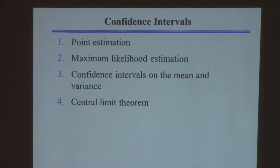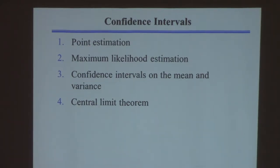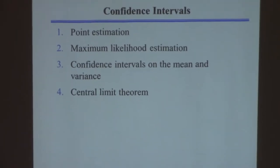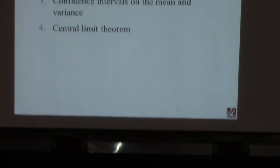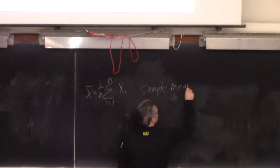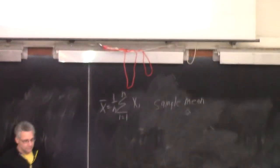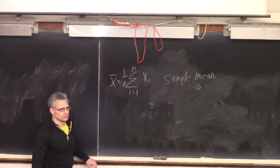We're going to talk today about something called confidence intervals. The idea is that if we have a group of samples and we'd like to calculate the mean, we take all the sample values, add them up, and divide by n — that's called the sample mean. Hopefully you have the feeling that the more samples you get, the better.